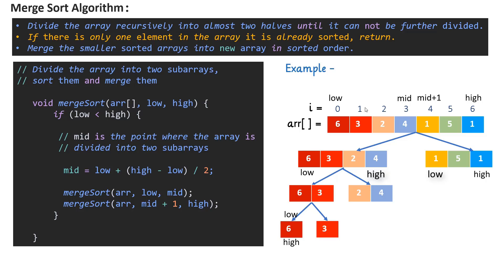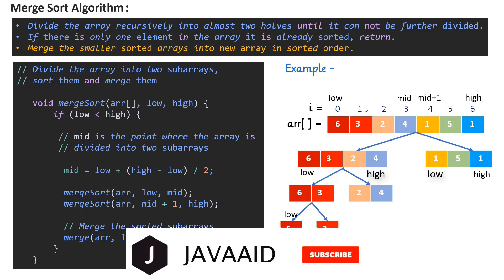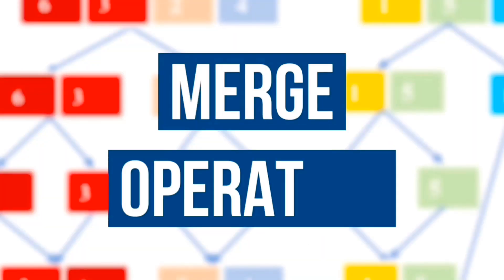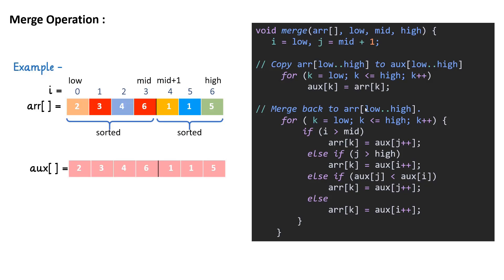So far we have completed two steps. Let's talk about the third or last step: merge the smaller sorted arrays into a new array in sorted order. Let's understand this merge operation in detail first. Here is the code which will perform the merge operation. We will understand this with the given example on the left side. We have two sorted arrays or partitions inside the array, and we will merge this into one sorted order. First create the auxiliary array and copy all the elements from the given array.